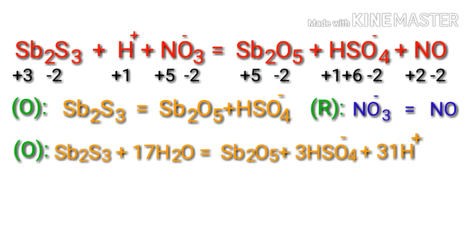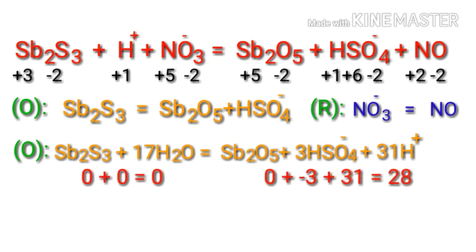For a redox reaction, the total charges on both sides must be equal. Check this in the oxidation half-reaction — both sides are not equal. To make them equal, you should add electrons, not protons. Adding 28 protons to the left side would be wrong; instead, you add 28 electrons to the right side to make the charge equal to zero.